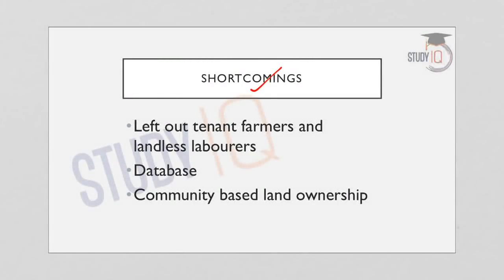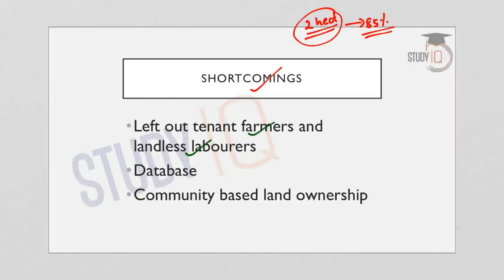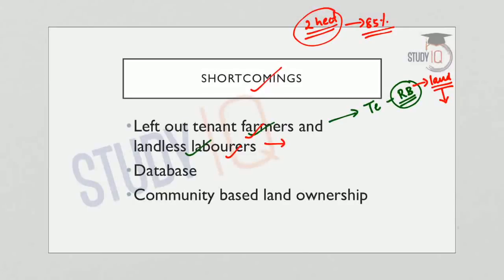Now coming to certain shortcomings of PM Kisan: firstly, PM Kisan aims to cover small and marginal farmers owning less than two hectares, which includes 85% of the farmer population. However, a major shortcoming is that the scheme has not provided any feature to include landless agricultural laborers and tenant farmers — the same shortcoming seen in Telangana's Rythu Bandhu scheme, which is also based on land ownership. Tenant farmers and landless laborers are excluded.